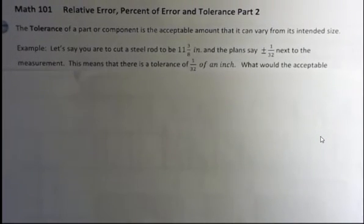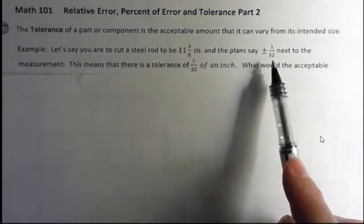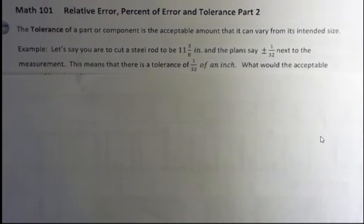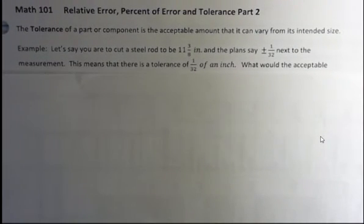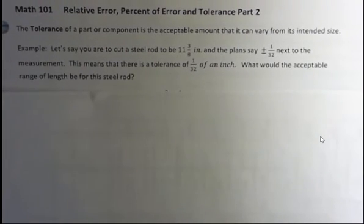Let's say you're to cut a steel rod to be 11⅜ inches long, and the plans say plus or minus 1/32nd next to the measurement. This means that there's a tolerance of 1/32nd of an inch. So then the question is, what would be the acceptable range of lengths for this steel rod? If your rod was 12 inches long, would that be okay? Are you within the range or not?